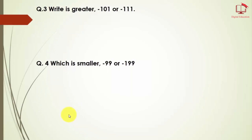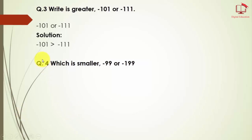Question number 3: write the greater — minus 101 or minus 111. Here we have the solution. We just have to identify which number is greater. Minus 101 is greater because the number closer to 0 is the greater number. So minus 101 is greater than minus 111.